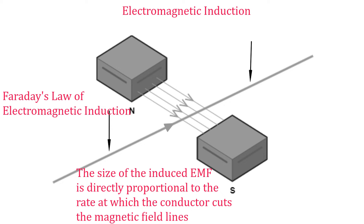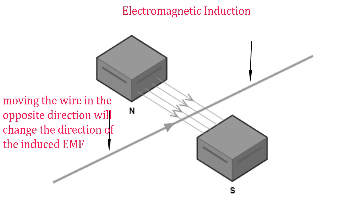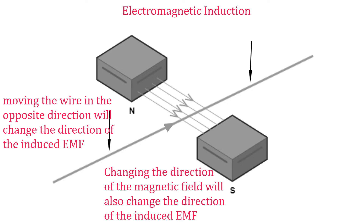Faraday's law states: the size of the induced EMF is directly proportional to the rate at which magnetic field lines are cut. It is also important to note: moving the wire in the opposite direction will change the direction of the induced EMF and current; changing the direction of the magnetic field would also change the direction of the induced EMF and current; no EMF or current is produced if the coil is not moving; and if the coil is parallel to the field, no EMF is induced.